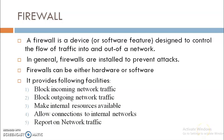First of all, what is a Firewall? A firewall is a device or software feature which is designed to control the flow of traffic into and out of a network. In general, firewalls are installed to prevent attacks. A firewall can be either hardware or software. In short, it is a hardware or software-based network security system that controls incoming and outgoing network traffic based on rules and policies defined at a particular layer.